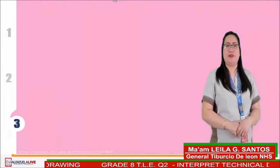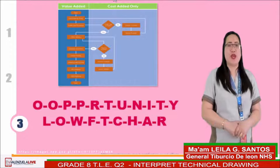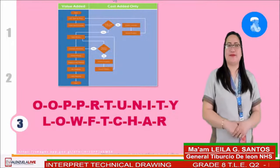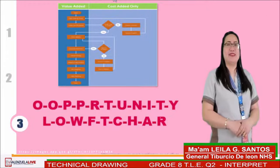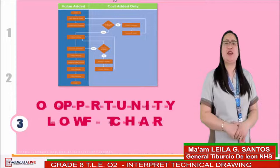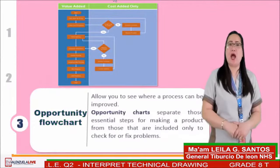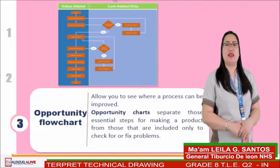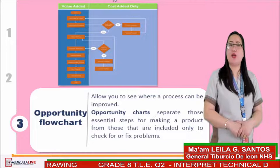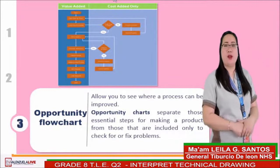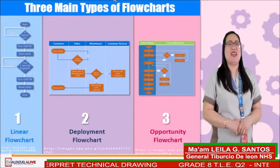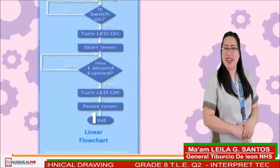The third type is an opportunity flowchart. It allows you to see where a process can be improved. This type separates those essential steps for making a product from those included only to check for or fix problems. The most used type of flowchart today is the linear flowchart.